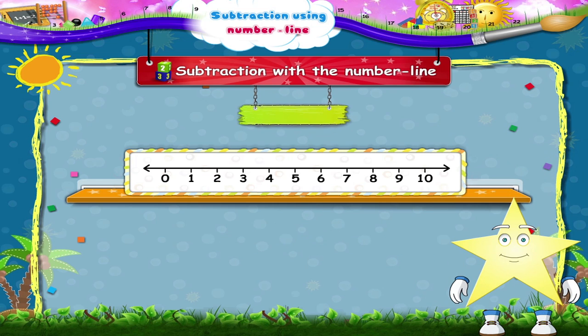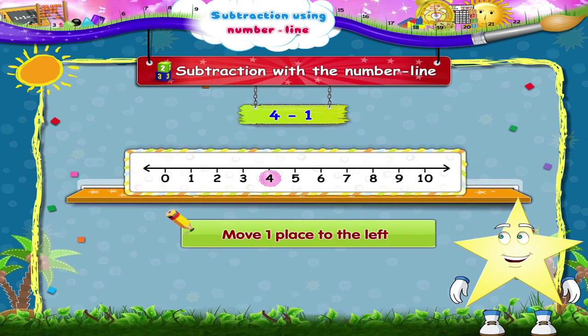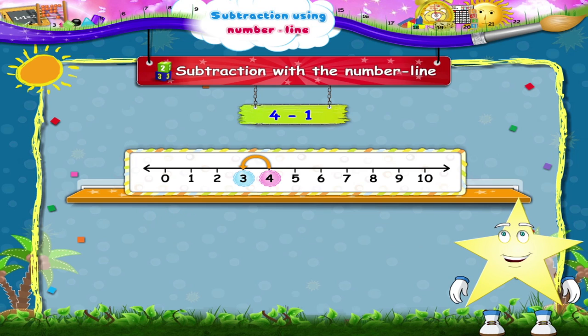Here is four minus one. Start from four. We move one place to the left. We reach the number three. So four minus one is three.